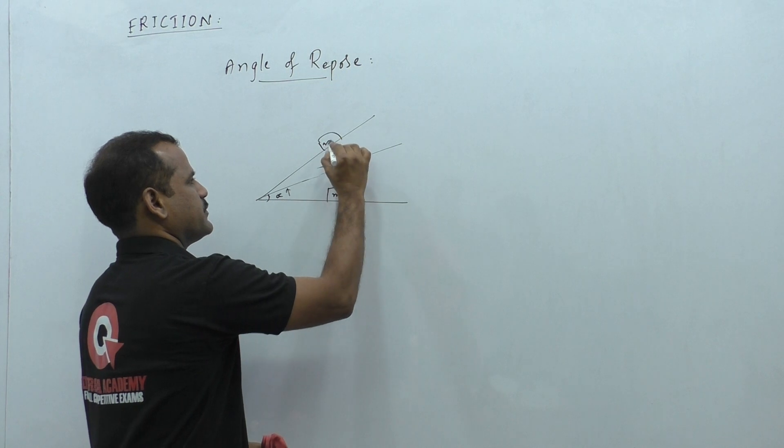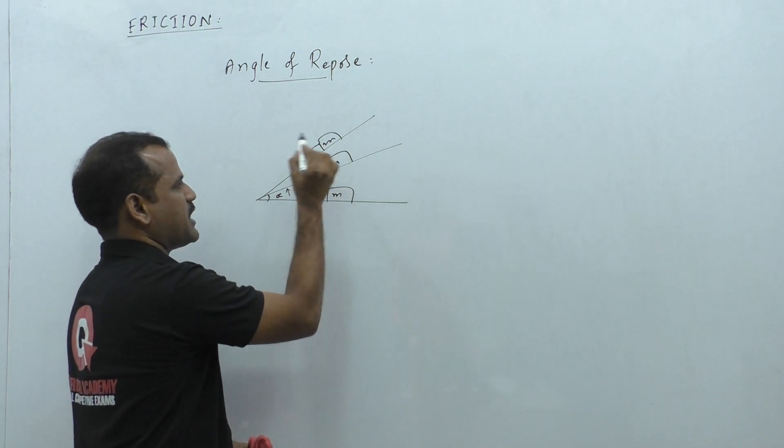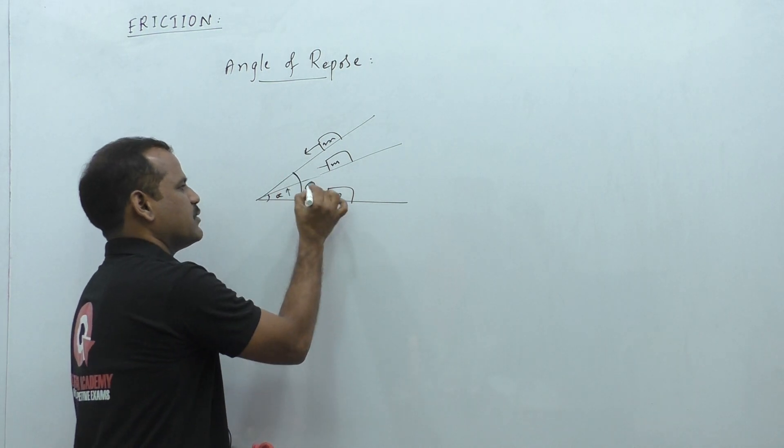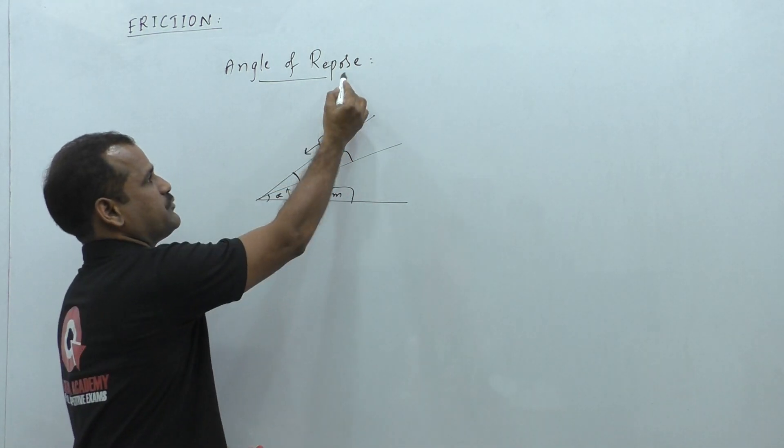At this point, if the object starts sliding down, then this angle we are taking as the angle of repose.